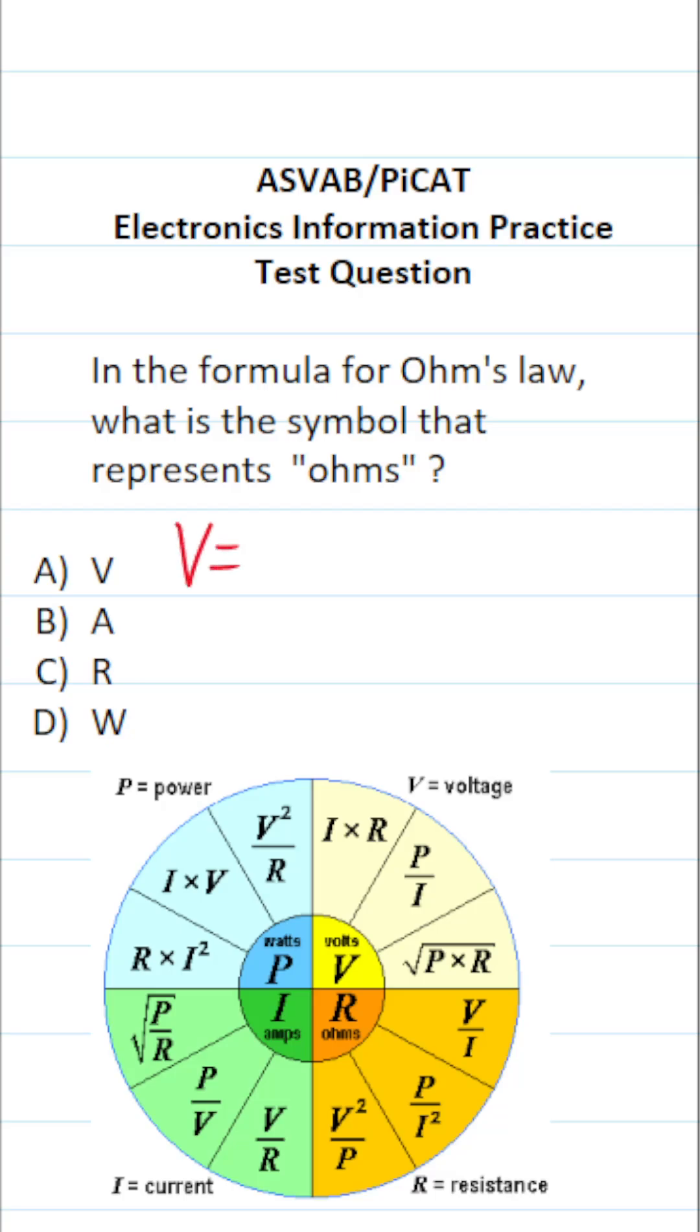So Ohm's Law says voltage is equal to your current times your resistance. That is V equals I times R.